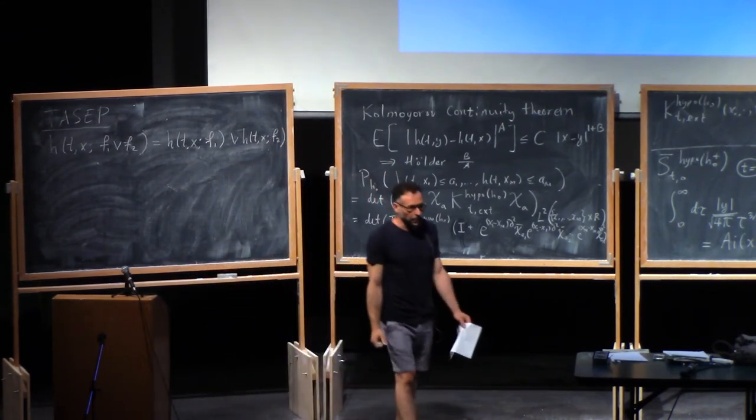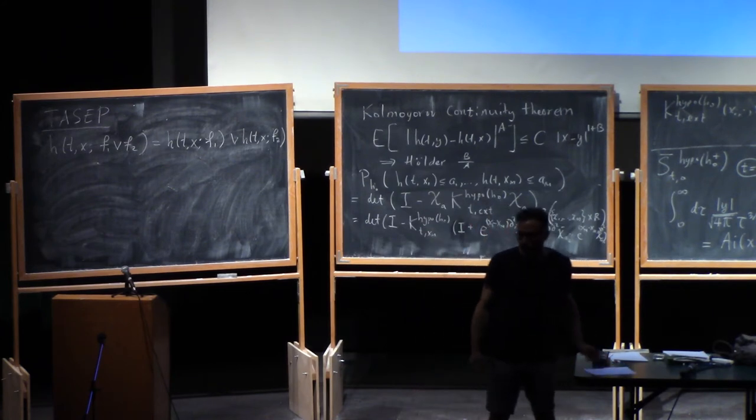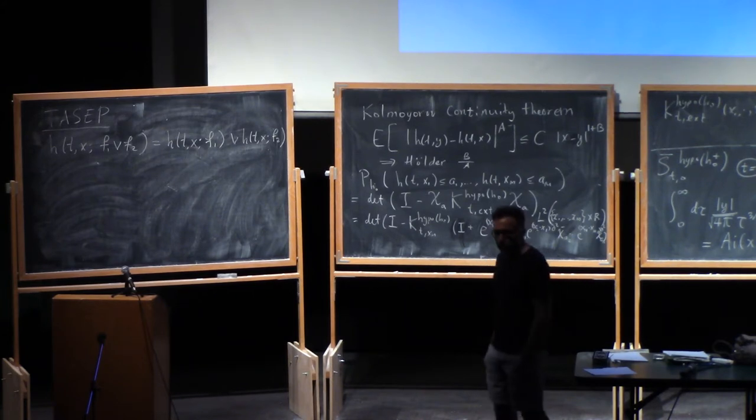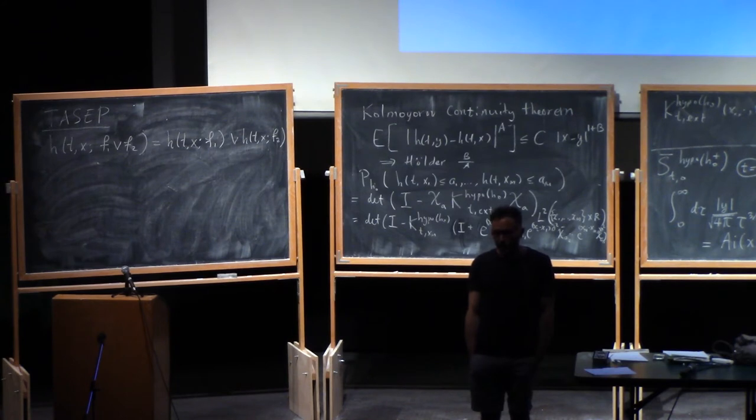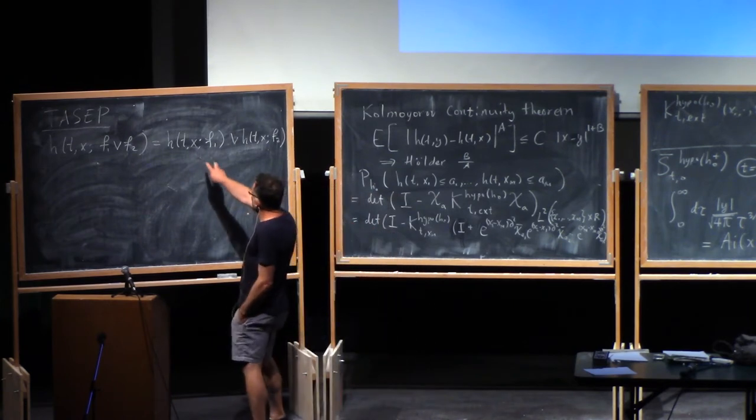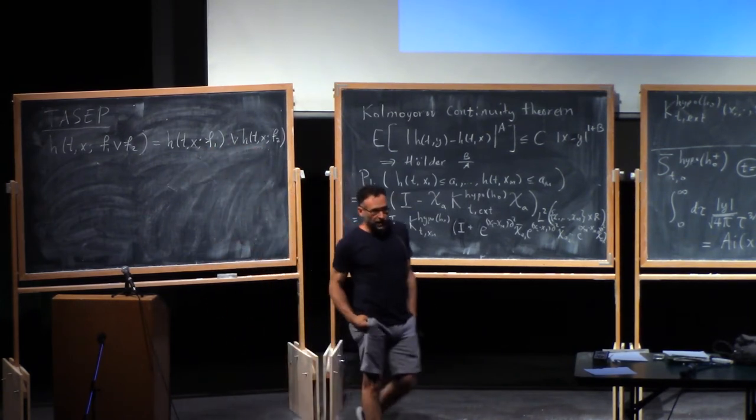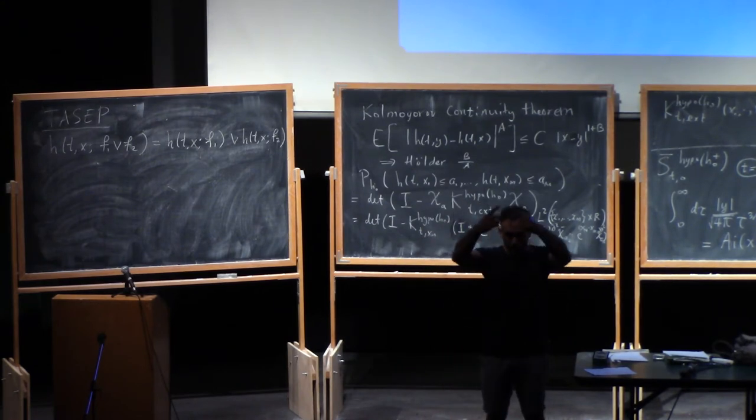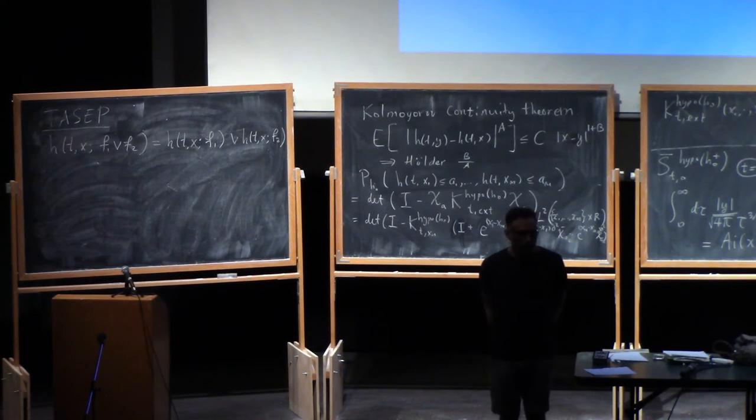It turns out that that's equal to... and I'm going to have to qualify this statement a lot, so don't start asking me questions too fast. That's equal to the max starting from the two initial data. Okay, so TASEP has this wonderful property. It preserves max. Now, now I have to qualify this. So what does it mean to start TASEP with two different initial data? We never really talked about that. So the problem is the right-hand side of this thing actually, in principle, doesn't make any sense at all. Because you start from some initial data, and you start flipping guys down. And the two things are flipping... the flips have nothing to do with each other, right?